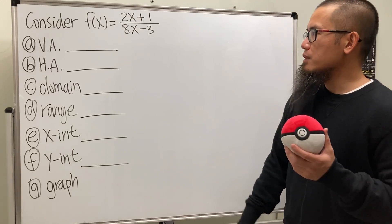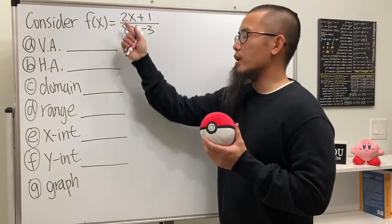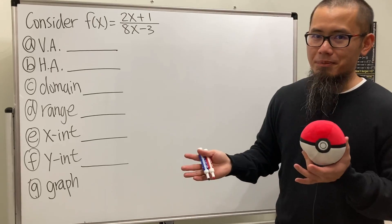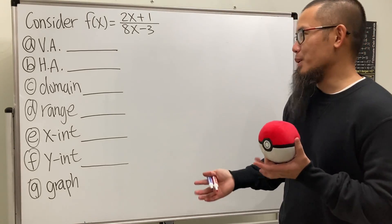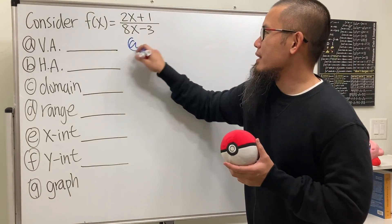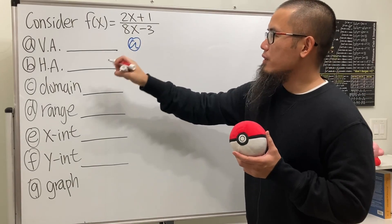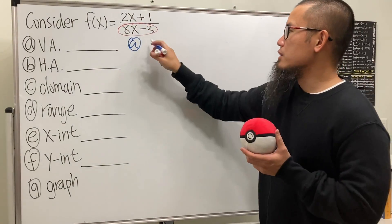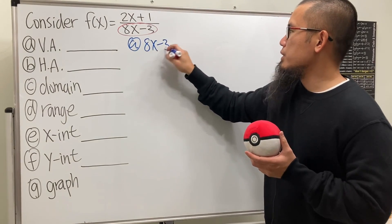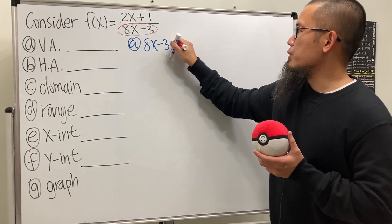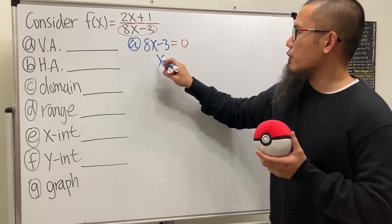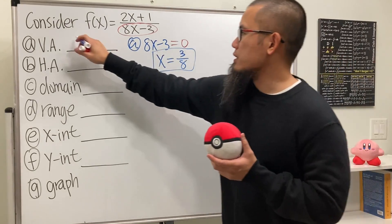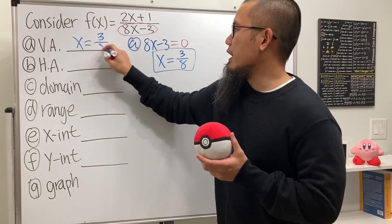First, we see that there's nothing that we can reduce. For the vertical asymptote, we look at the denominator and make it equal zero. So we get 8x minus 3 equals zero and solve for x. We get x is equal to 3 over 8. That is the vertical asymptote: x equals 3 over 8.